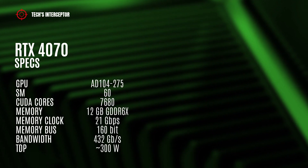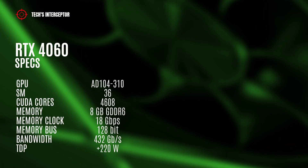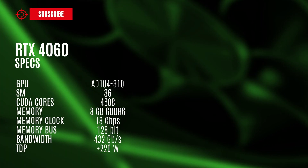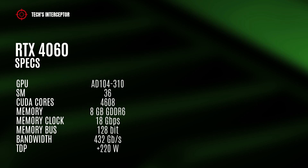All with a TDP of 300 watts. Finally, the RTX 4060 should feature the full AD107-310 GPU with 36 streaming multiprocessors, 4608 CUDA cores, 8 GB of GDDR6X memory operating at 18 GB per second, 128-bit memory bus and 432 GB per second of memory bandwidth, and a TDP of around 220 watts.